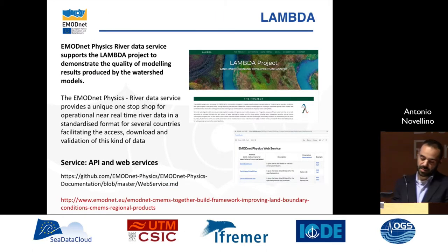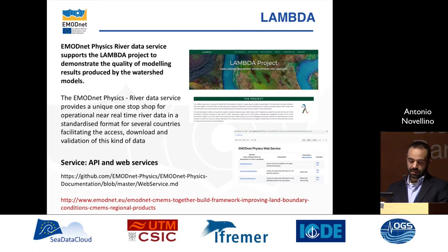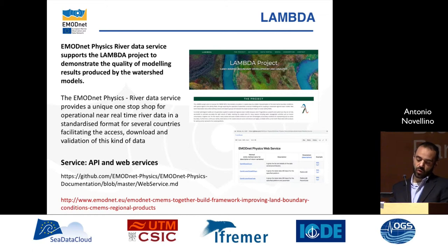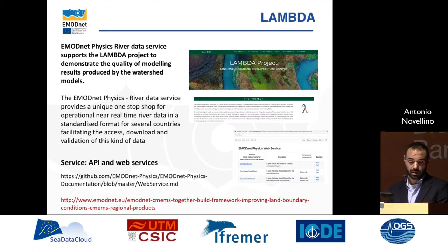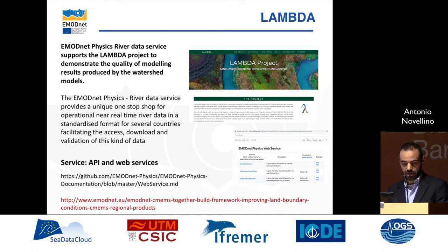One last example is from the Lambda project, which recently started working on river data. The goal of this project — which will have a presentation tomorrow on its activities — is to offer the forecast community more information about rivers, which deeply affect coastal areas. Thanks to what we started doing in EMODnet Physics, more river runoff data is now available. This data can be integrated by means of easy tools for technicians, using API web services into further applications, to assimilate into models and run new forecasts.